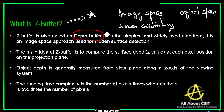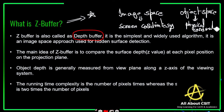The image space approach is implemented in the screen coordinate system, whereas the object space approach is implemented in the physical coordinate system. The back face detection algorithm works on the physical coordinate system, whereas the image space approach is used for hidden surface detection and works on the screen coordinate system.